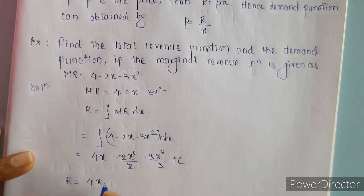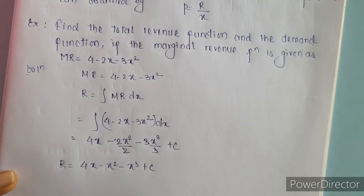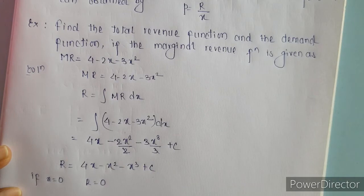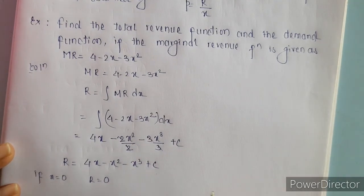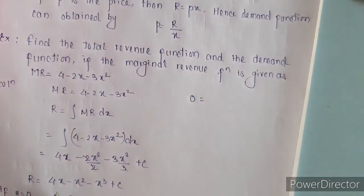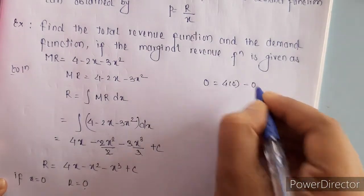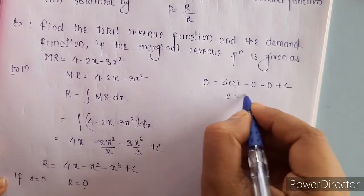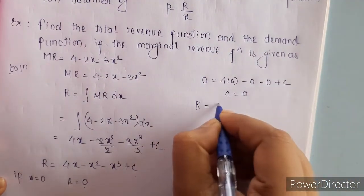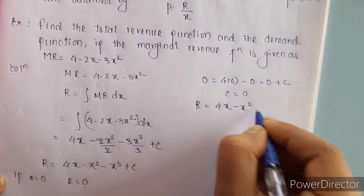So the total revenue function is 4X minus X squared minus X cubed plus C. Now we have to find the value of C. We know that if output is 0, revenue will also be 0 — if we are not producing anything, we are not going to have any income. Using this condition, substituting X = 0: 4 times 0 minus 0 squared minus 0 cubed plus C gives C = 0. So total revenue is 4X minus X squared minus X cubed.